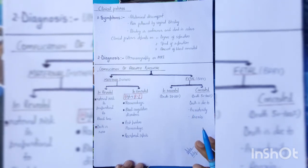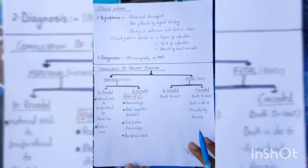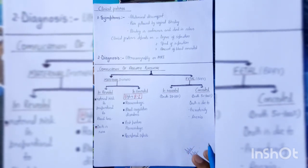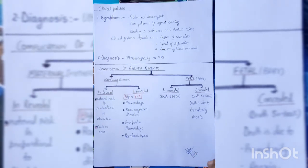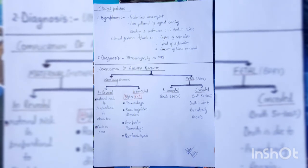So that covers APH — antepartum hemorrhage. We saw APH types, definition, causes, types, clinical features, and complications of both placenta previa and abruptio placenta. Hope you understood this. I tried to explain it in an easy way with mnemonics. Read it once more and you'll remember it easily. Thanks for watching!